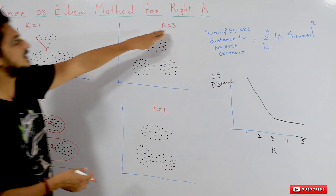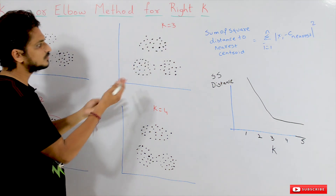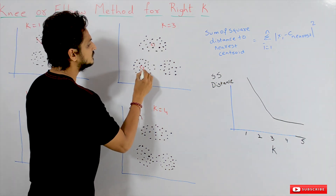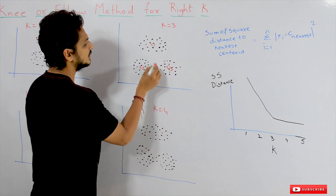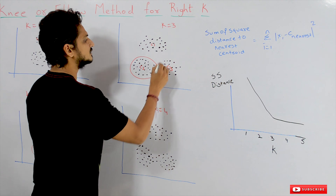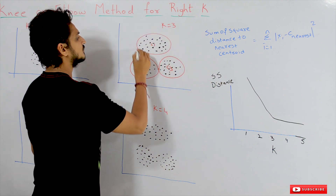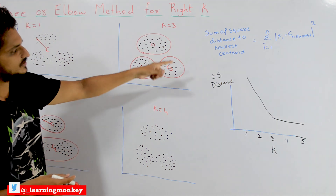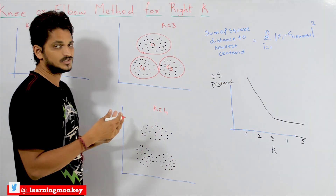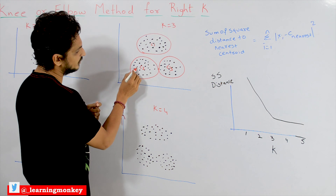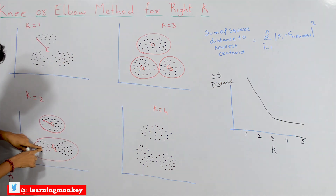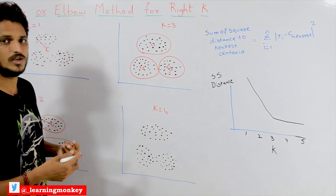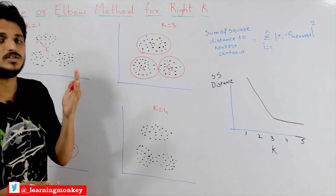As K increases to 3, assume that after applying K-means clustering with K equal to 3, the centroids we get are C1, C2, and C3. One cluster forms here, another cluster here, and the third cluster here. Again we calculate the sum of squared distances to the nearest centroid, and again the distance decreases. Previously the distances for these points were larger; now the centroids have changed and the distance has been reduced. So as the K value increases, the sum of squared distances keeps decreasing.